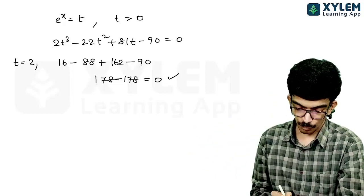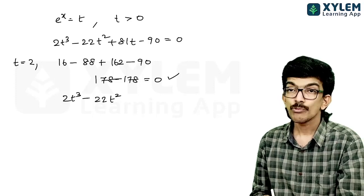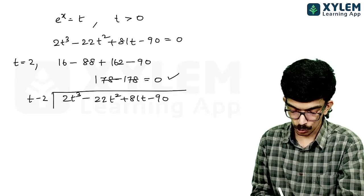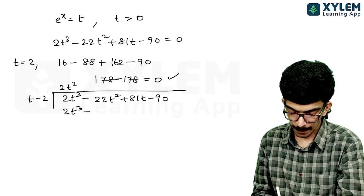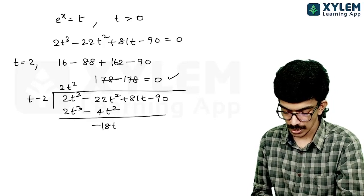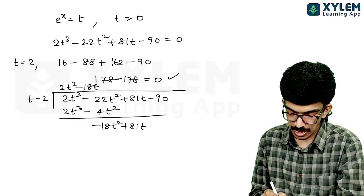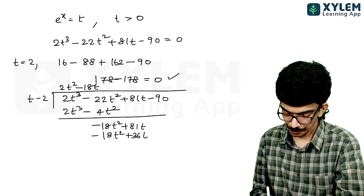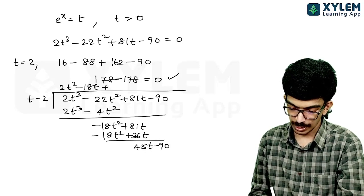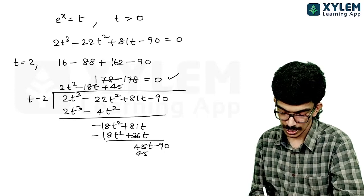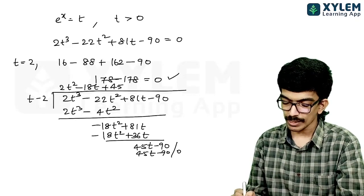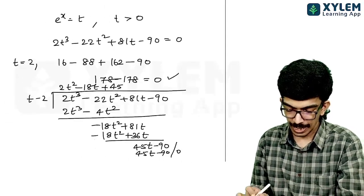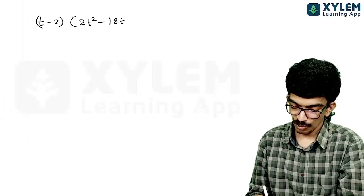To find the remaining quadratic factor, divide 2t³ - 22t² + 81t - 90 by (t - 2). Performing the polynomial division gives the quotient 2t² - 18t + 45 with remainder 0. So the cubic factors as (t - 2)(2t² - 18t + 45) = 0.